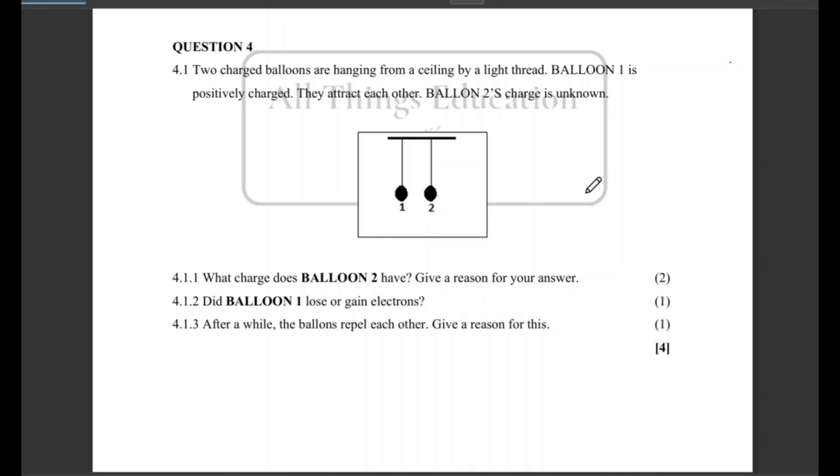So let's not waste time, let us answer this question. You are having two charged balloons - balloon one and balloon two - and both these balloons are charged and they are hanging from a ceiling by a light thread. Balloon one is positively charged, so they are giving us information about balloon one that it is positively charged.